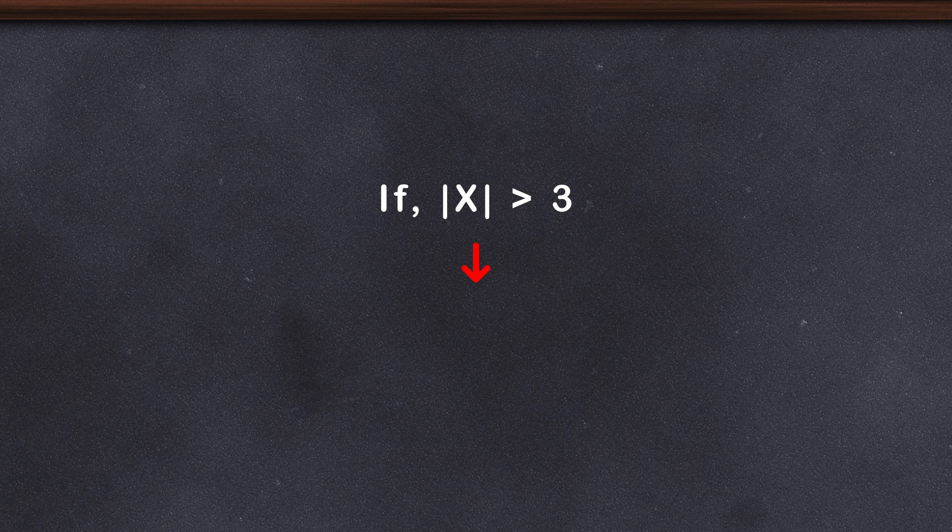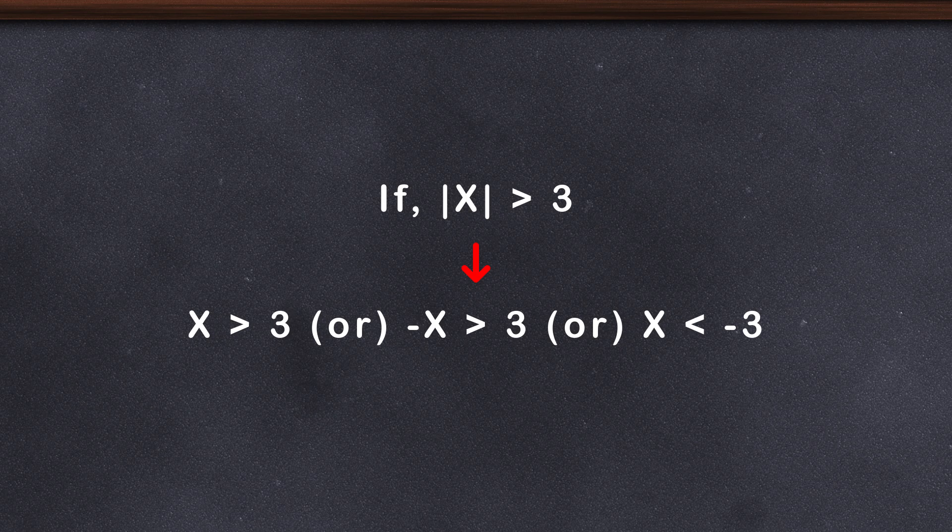When you remove a modulus, you have to consider two cases. If |x| > 3, then x > 3 or -x > 3 or x < -3. So you get a range of values that are correct when solving complex inequalities with moduluses. Remember to check if the solution set actually satisfies.